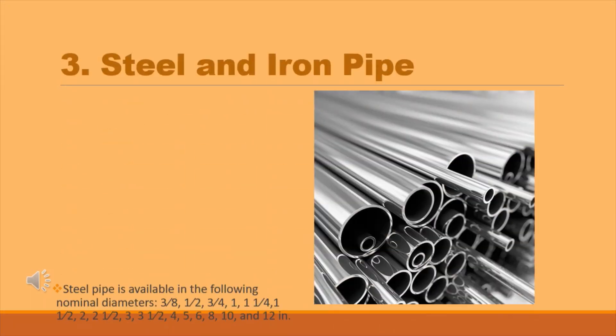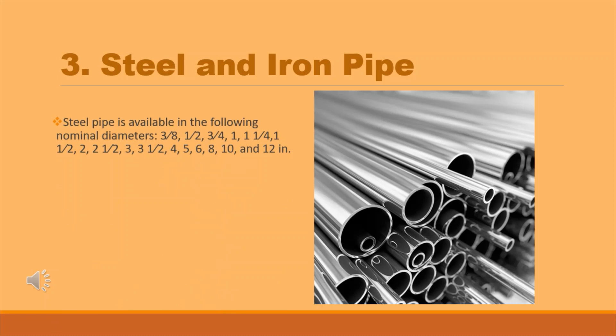Steel and iron pipe: steel pipe is available in the following nominal diameters — 3/8, 1/2, 3/4, 1, 1-1/4, 1-1/2, 2, 2-1/2, 3, 3-1/2, 4, 5, 6, 8, 10, and 12 inches. It is typically sold in lengths of 21 feet.